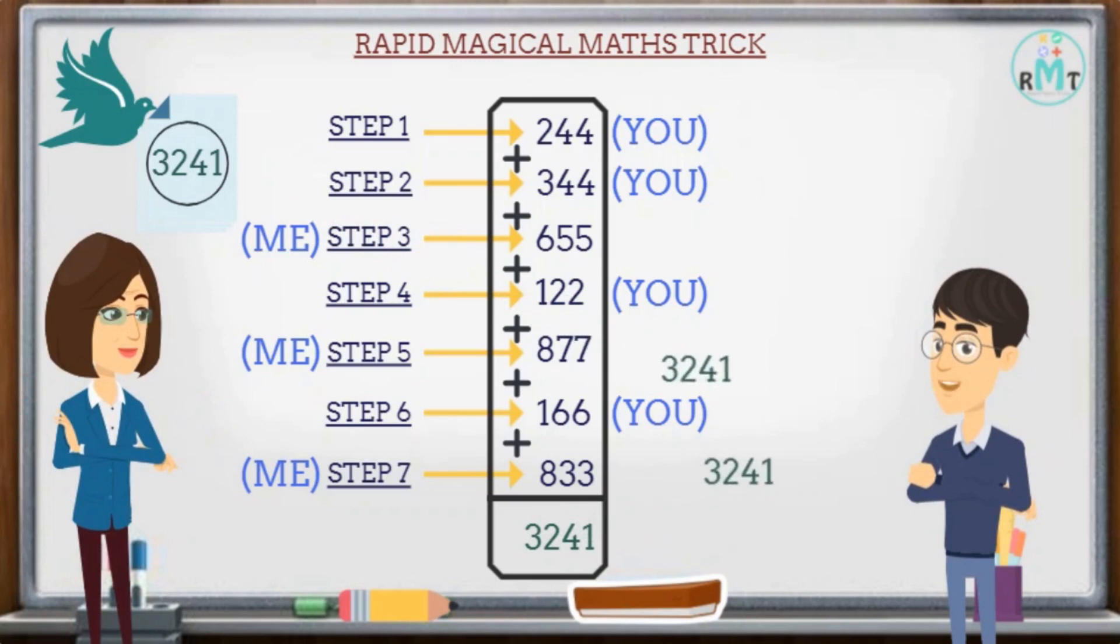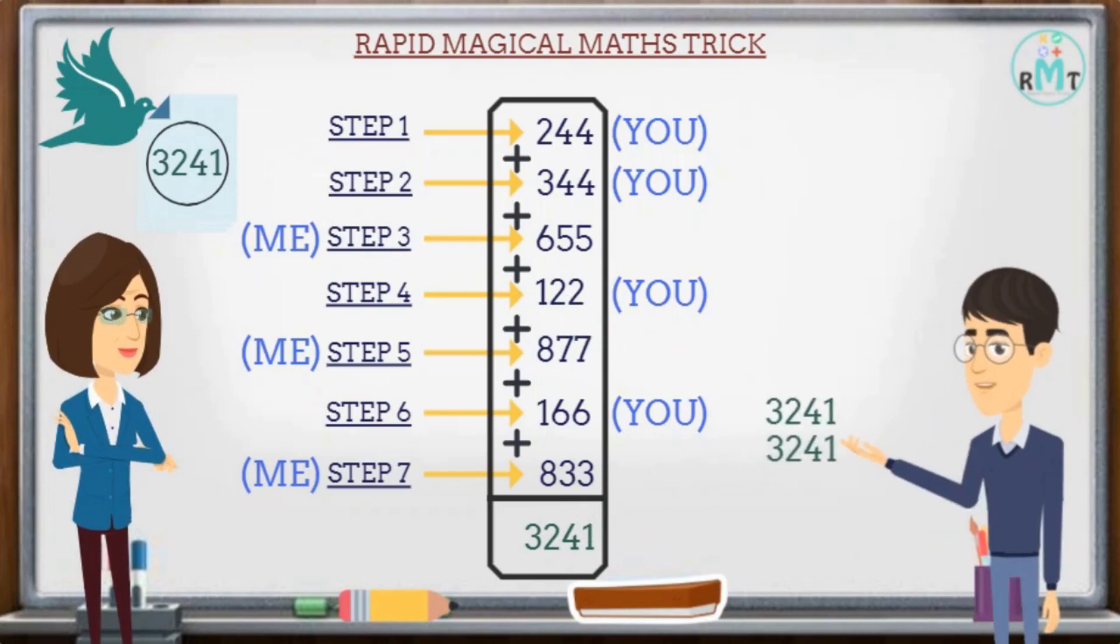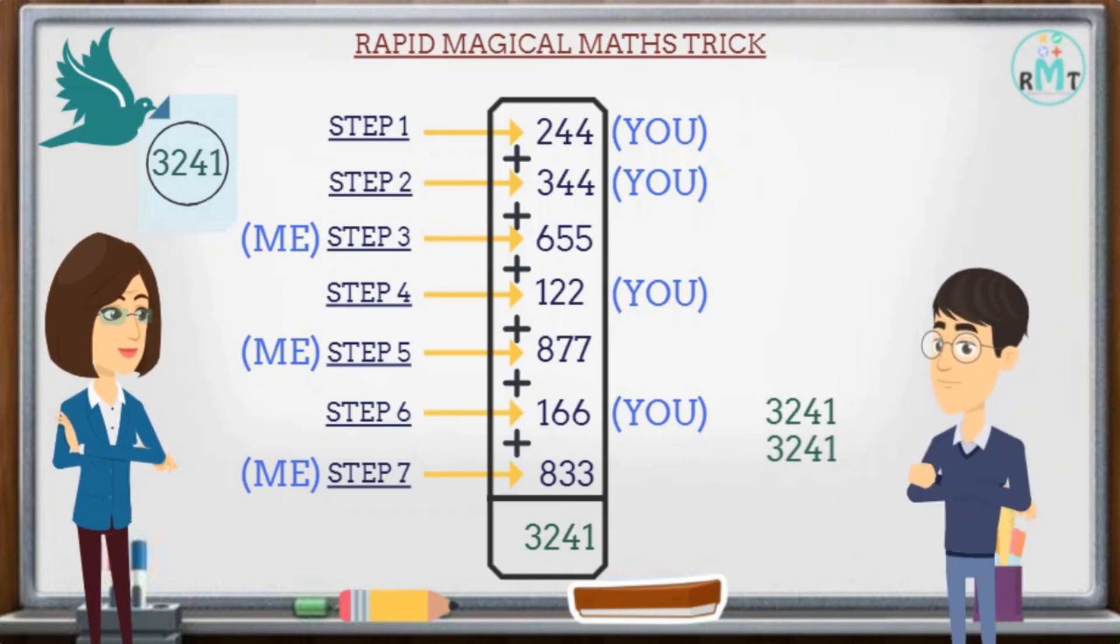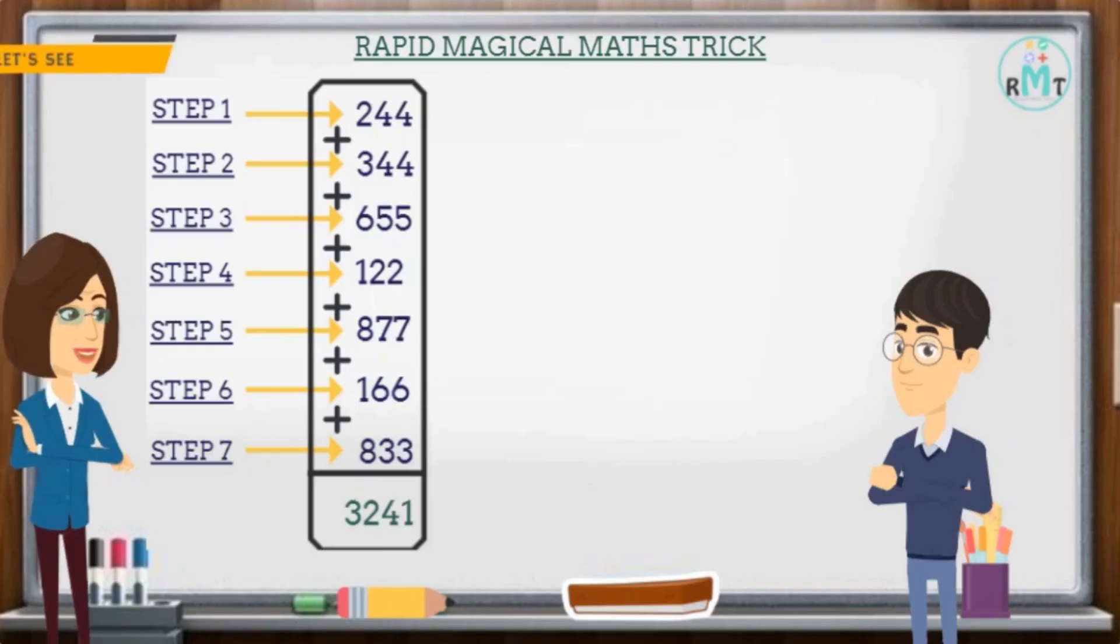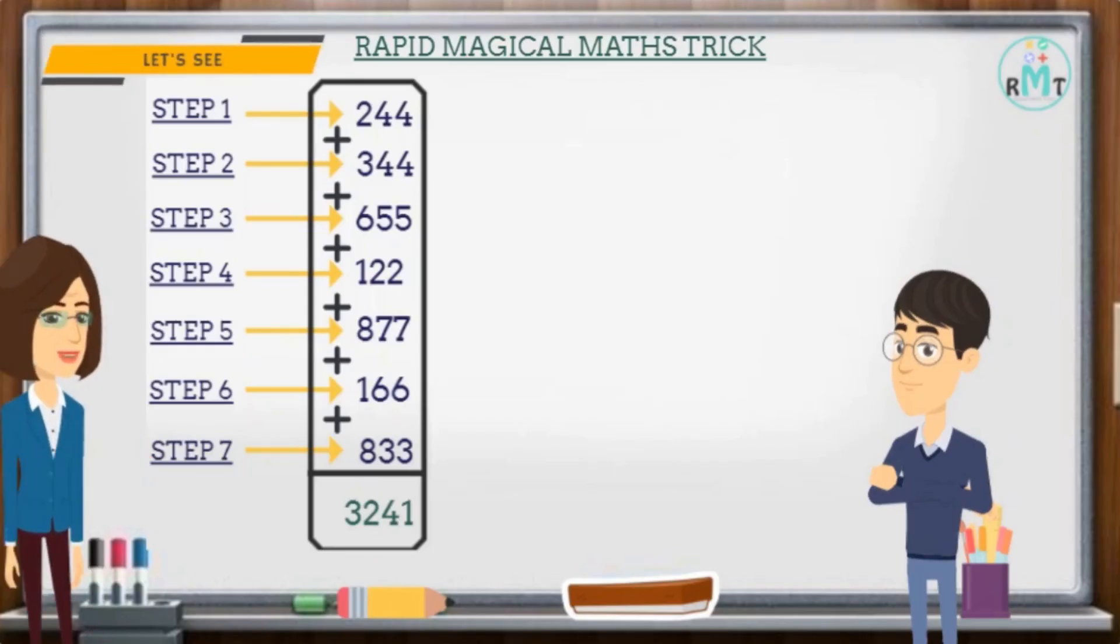Yes, both are the same, but how do you know the answer before the second step? What is the secret behind this? Let's see. You only mind the first digit your friend writes, that is 244.